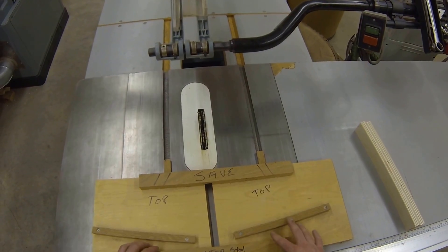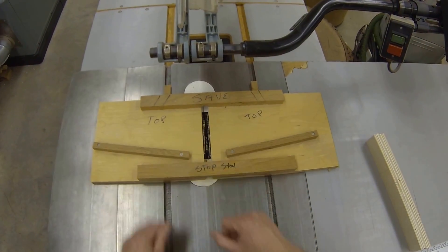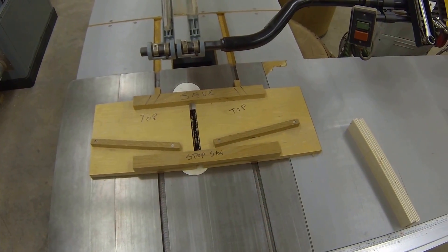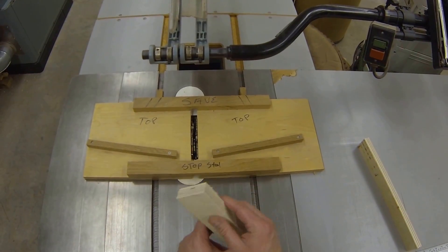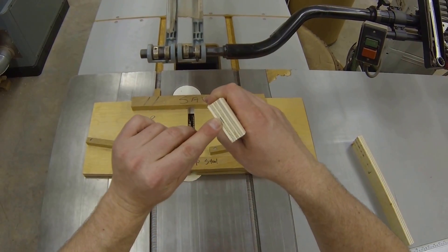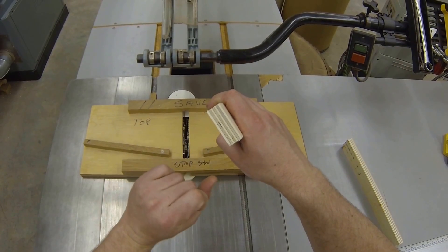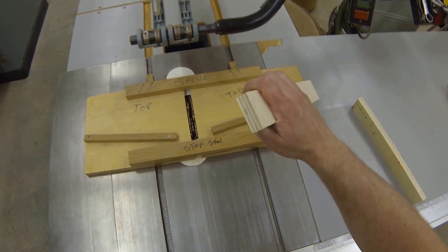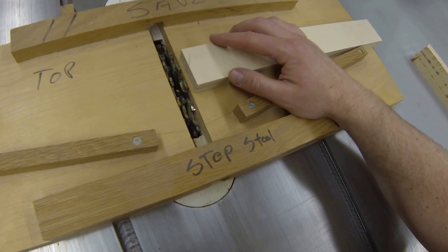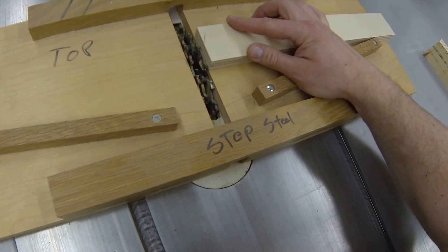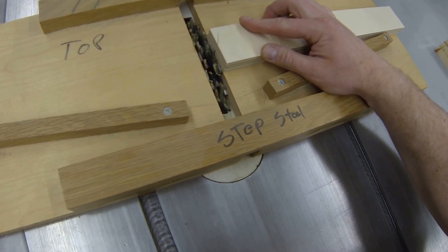Once we get that taken care of, what we need to do next is set up our blade height. If you look at your plans, you will find the depth that we need to cut that dado. I already have it marked out on my board here. Once you get it marked out on yours, all you need to do is bring that down to our table saw here next to the blade, elevate that up, and get it to the right height setting.